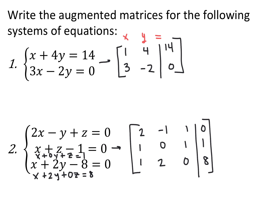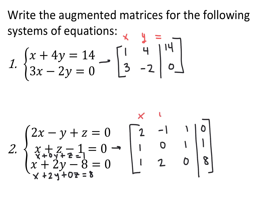For the first equation of the three-variable system, 2x minus y plus z equals 0 becomes 2, negative 1, 1, 0. The next equation, x plus z minus 1 equals 0, is the same as x plus 0y plus z equals 1, so it becomes 1, 0, 1, 1. And x plus 2y minus 8 equals 0 is the same as x plus 2y plus 0z equals 8, giving you 1, 2, 0, 8. So the first column is coefficients of x, the second column is coefficients of y, and the third column is coefficients of z.